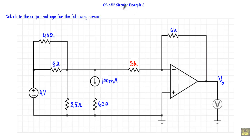In this video I will show you another example of operational amplifier — this will be example number two out of eight examples. We have to calculate the output voltage of this operational amplifier as indicated by this voltmeter. Output voltage is measured between the output terminal and the ground terminal.